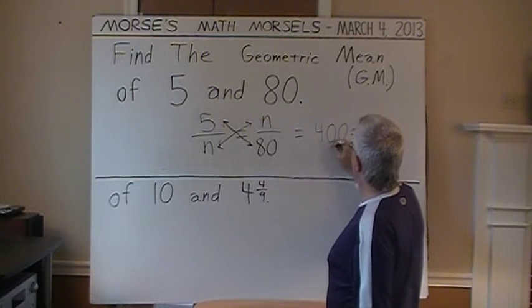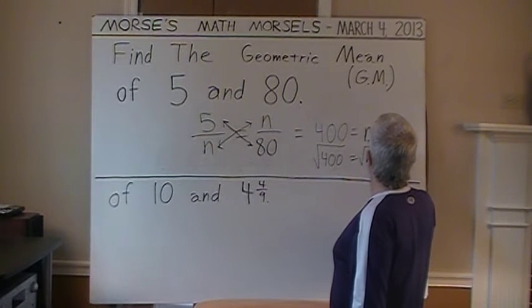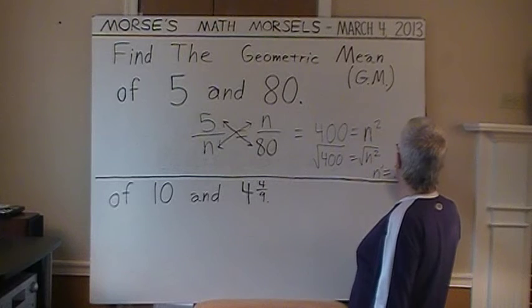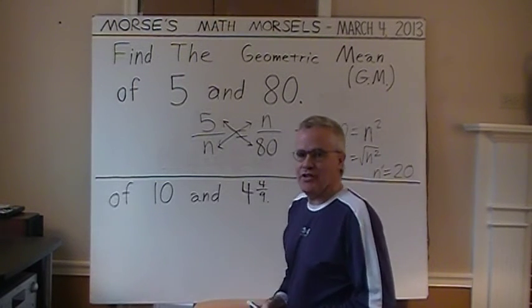And take the square root of N squared. And then N is again 20. The square root of 400 is 20. So 20 is our geometric mean.